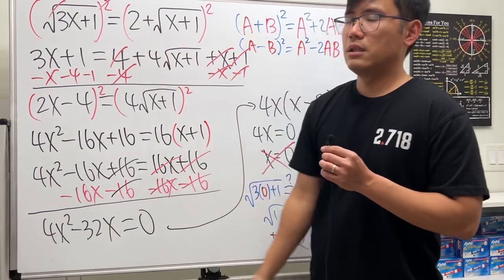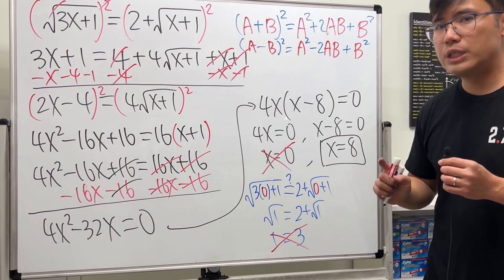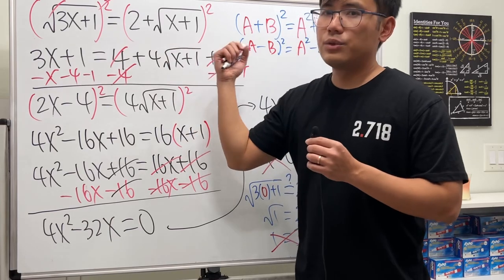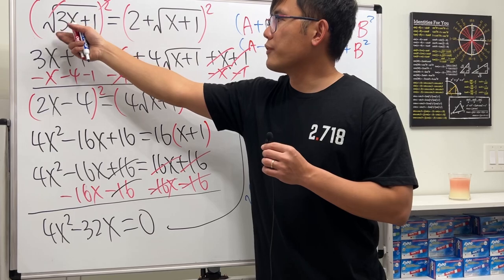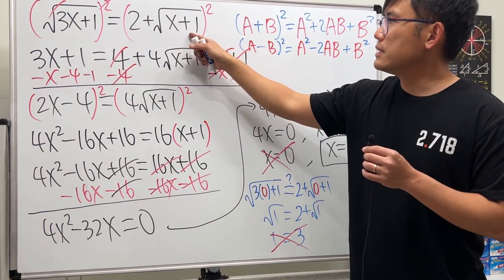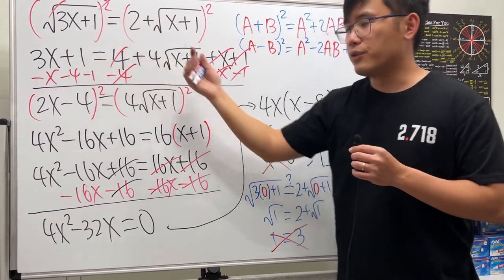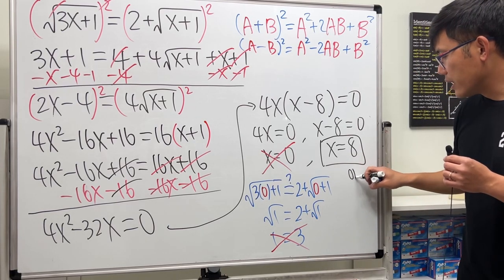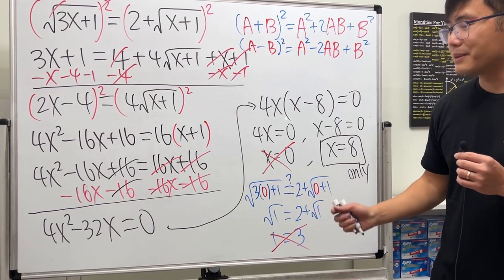And whenever we square both sides, while solving a square root equation, this kind of thing might happen. So be really, really careful. And I will tell you, if we put 8 into here and here, let's do this real quick. 3 times 8 is 24, plus 1 is 25. Square root of that is 5. Put 8 in here. 8 plus 1 is 9. Square root of that is 3. 3 plus 2 is 5. So 5 is equal to 5. So this right here, indeed checks. This is the only solution. This is the only solution. So be really careful and good luck.